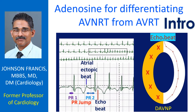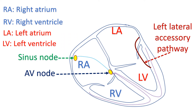In those with a concealed accessory pathway, pre-excitation will not be manifest on ECG, as there is no antegrade conduction in that pathway during sinus rhythm. It takes part in the retrograde limb of reentry in AVRT. Sometimes pre-excitation is not evident on ECG because of relative competing conduction velocities between the AV nodal pathway and the accessory pathway.